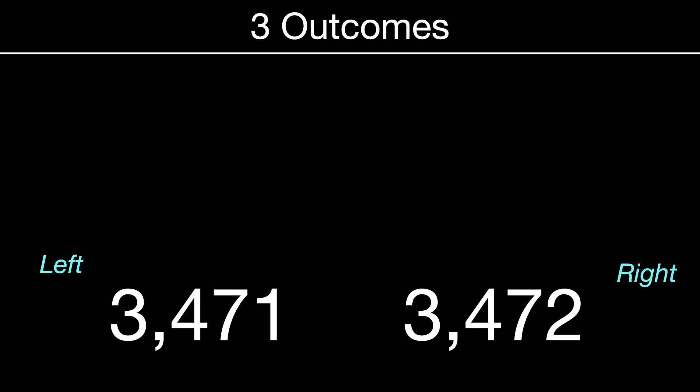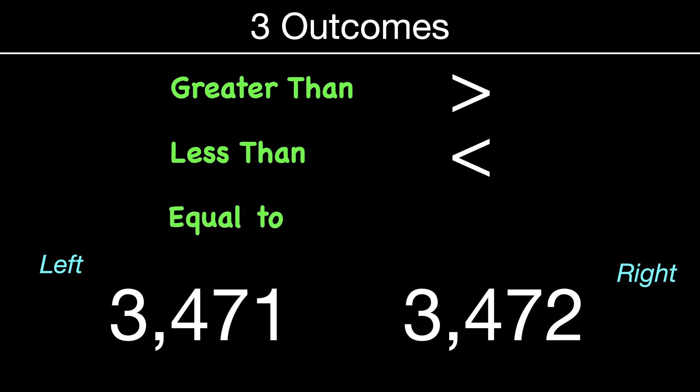So when we're comparing numbers, there are three outcomes, greater than with the greater than symbol, less than, and equal to.